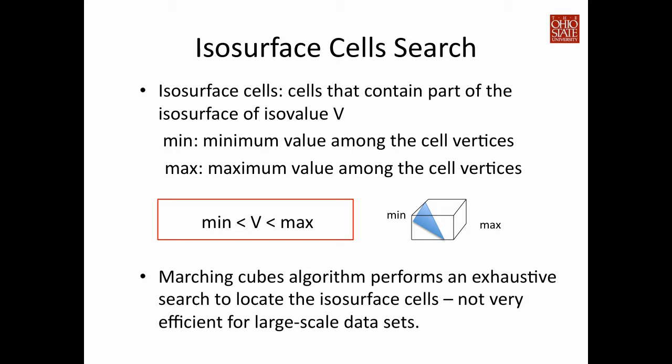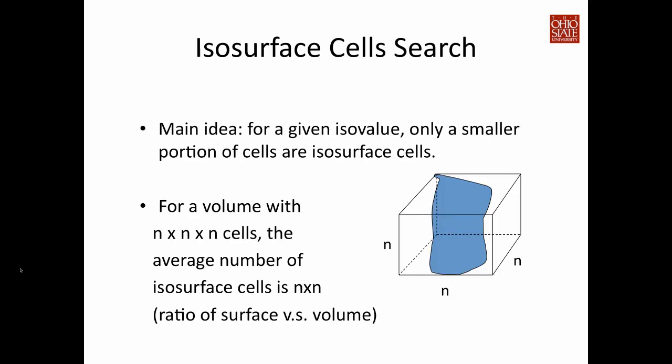Previously we described the Marching Cubes algorithm. It is an algorithm that performs an exhaustive search — it goes through cell by cell to locate the isosurface. While this algorithm is very simple, it is not very efficient for large-scale datasets. In fact, it is necessary to go through every single cell. This is because for a given iso value, when extracting an isosurface from a three-dimensional dataset, only a small portion of cells are going to be intersected by the isosurface.